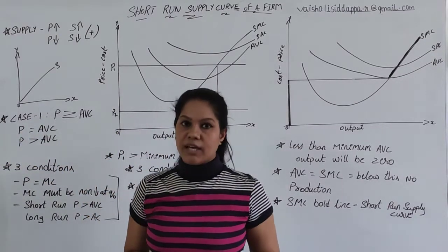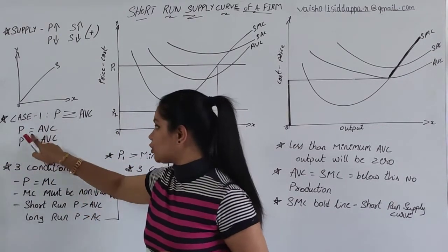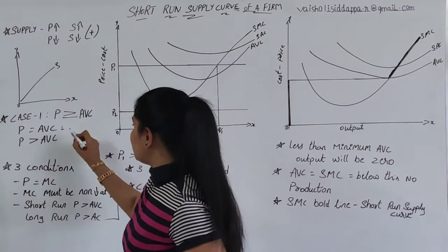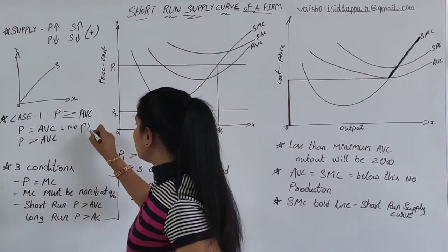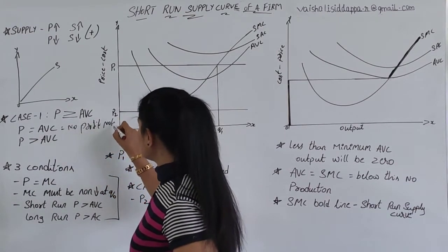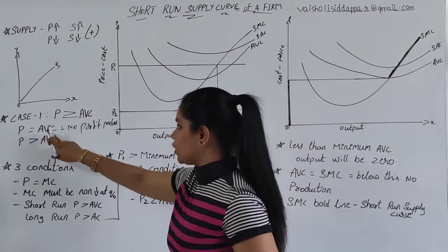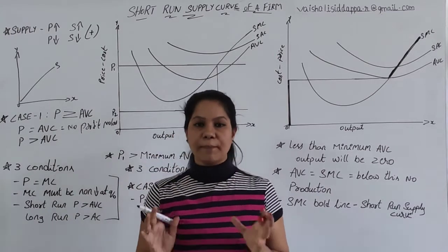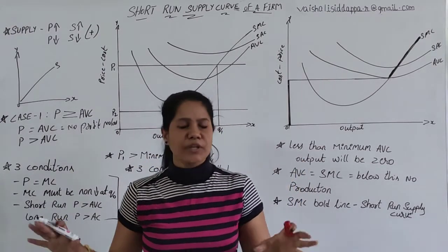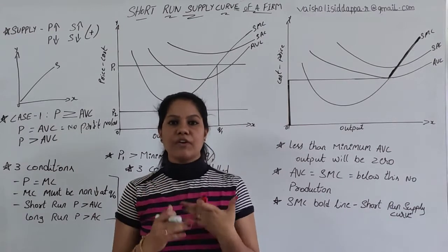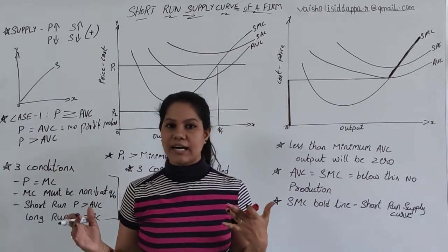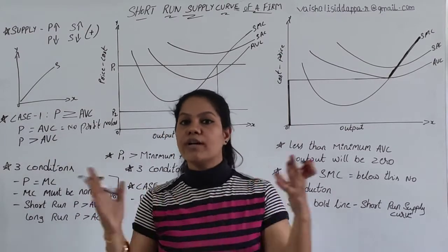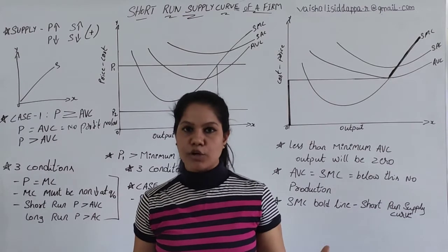In Case 1, where P equals AVC or P is greater than AVC, we have a no-profit, no-loss situation when P equals AVC. The firm is not going to make any profit, but at the same time they are not going to lose anything. If I am investing 10 rupees, I will get back 10 rupees — no profit, no loss.